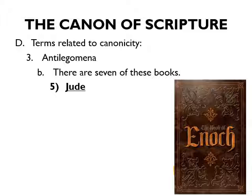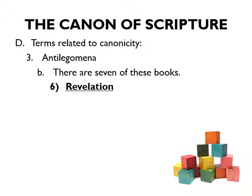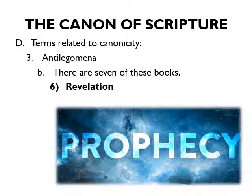The sixth and final disputed book is Revelation, disputed because of its prophetic tones. While 2 Peter was the most hotly debated, Revelation was disputed longer than any other book, simply taking more time to reach a decision. Ultimately, because they knew John the Apostle wrote it, they embraced it as canon — the rule of our life.